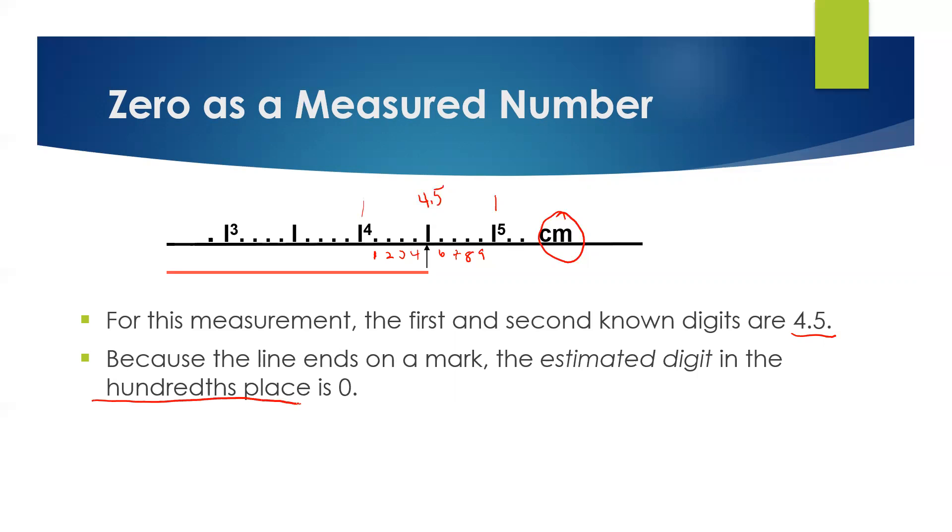So how do we record that? It's easy. We add a zero. So this measurement is reported as 4.50 centimeters. You have to make sure to put that zero in the hundredths place.